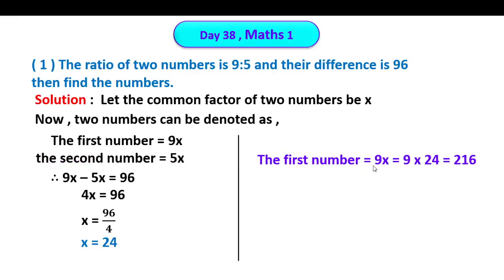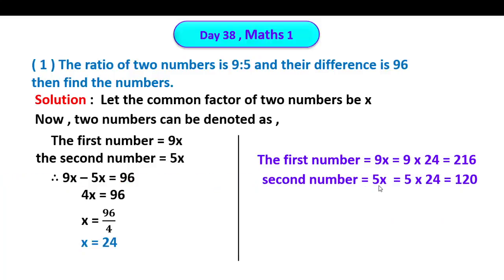The first number is equal to 9x. Substituting x equals 24: 9 into 24 equals 216. And the second number is 5x. Substituting x equals 24: 5 into 24 equals 120. The two numbers are 216 and 120.